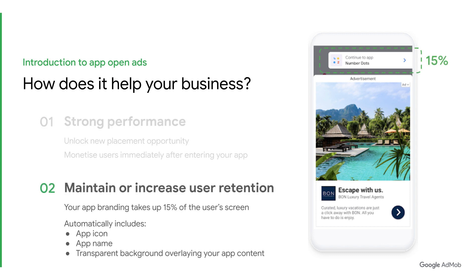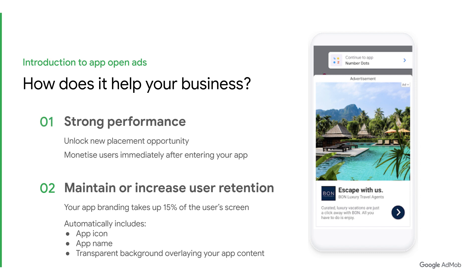Second, AppOpenAds provide a seamless user experience. With this format, you can display your app's branding in the top 15% of the user's screen, reminding users of the app they are in. Additionally, the transparent background overlay on your app content makes it easy for users to distinguish between the ad and your app content. In essence, AppOpenAds can help you unlock new revenue opportunities for your app, while allowing your users to enjoy a more refined ad experience.